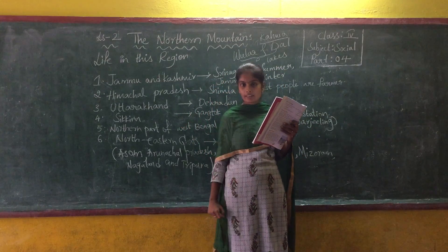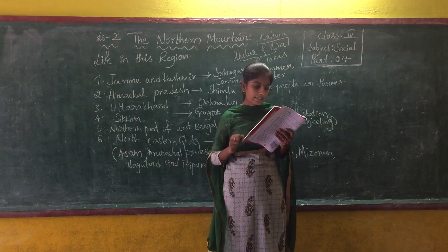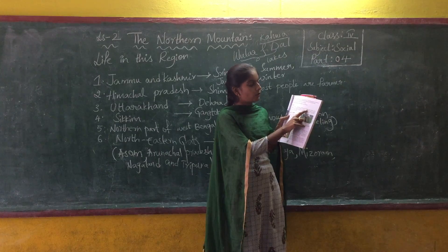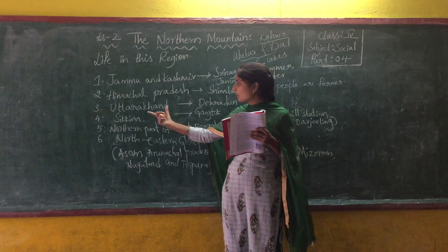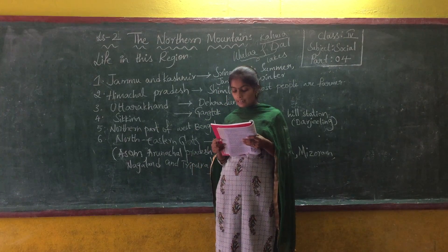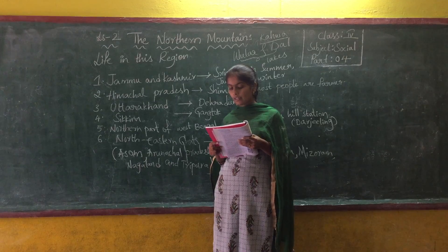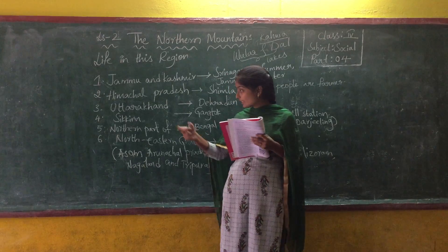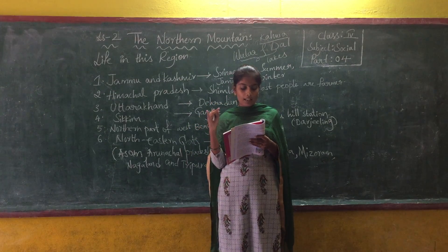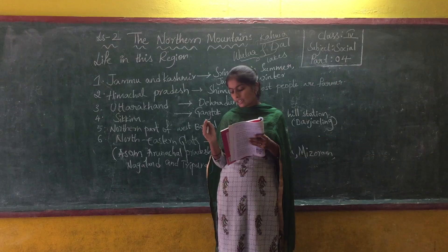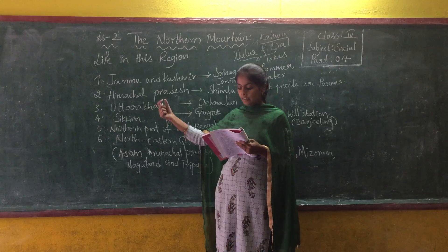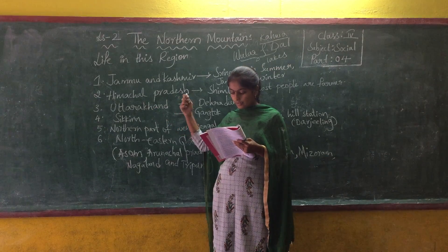There are two hill ranges which come under Uttarakhand — Garhwal and Kumaon. The important hill stations of this region are Mussoorie, Nainital, and Ranikhet. These are the three important hill stations present in Uttarakhand.